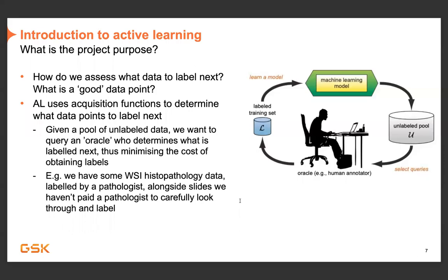The acquisition function estimates what data to add. You have an oracle — some way of labelling the data, often trained labelled data with the label masked. You want to query the oracle as few times as possible to maximize model performance. In the medical imaging case, this means asking pathologists as few times as possible to label a slide, minimizing cost.